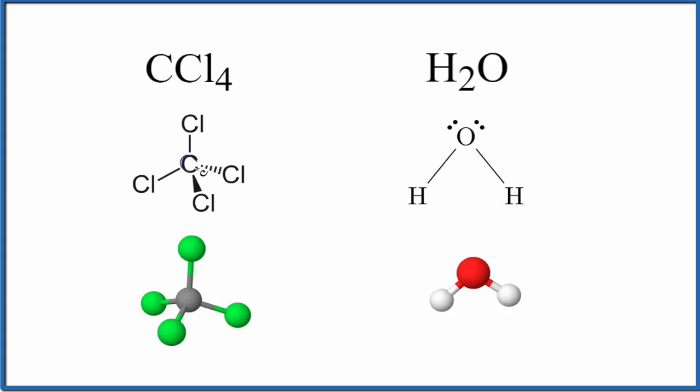CCl4, it has a carbon in the center, and then it has four chlorine atoms around it, but they're all pointed in opposite directions. So even though there's a difference between carbon and chlorine in terms of electronegativity, all of these dipoles, they cancel out. That means that CCl4, that's going to be a nonpolar molecule.